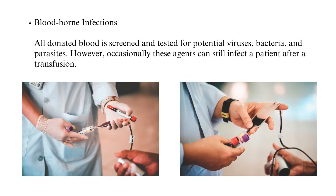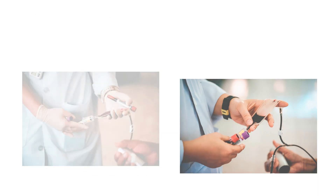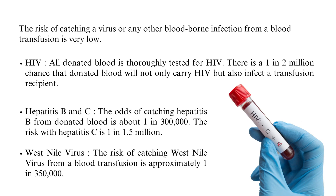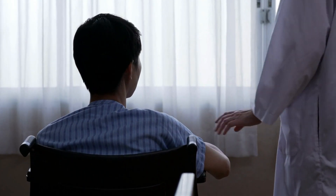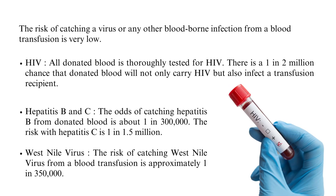All donated blood is screened and tested for potential viruses, bacteria, and parasites. However, occasionally these agents can still infect a patient after a transfusion, though the risk of catching a bloodborne infection is very low. The chance that donated blood carries HIV and infects a recipient is 1 in 2 million. The odds of catching hepatitis B from donated blood is about 1 in 300,000, and the risk with hepatitis C is 1 in 1.5 million. The risk of catching West Nile Virus from a blood transfusion is approximately 1 in 350,000.